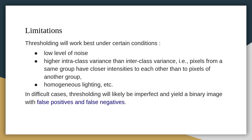There are limitations of thresholding. Thresholding works best under certain conditions: a low level of noise, and higher intra-class variance than inter-class variance — meaning pixels from the same group have closer intensity values to each other than to pixels of another group — as well as homogeneous lighting.